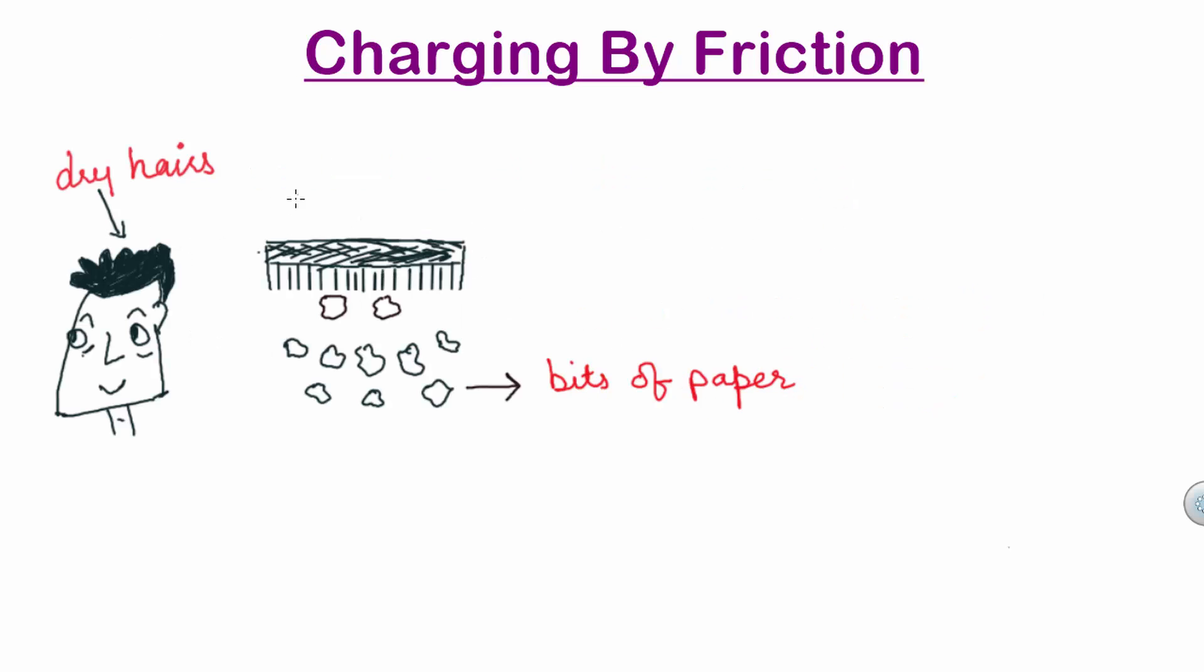If we pass a comb through dry hairs, the comb becomes electrically charged and can attract small pieces or bits of paper. This is because the comb might have lost its electrons or have acquired some electrons when we rub it with dry hairs. This comb is a charged body. The net charge on the comb interacts with the net charge on small bits of paper which results in attraction.